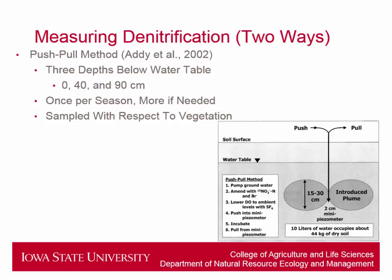The second method we're going to use to measure denitrification is the push-pull method developed by Addy et al. This method involves installing piezometers at three different depths — at zero, 40, and 90 centimeters below the water table. We push a plume of enriched N15-labeled nitrate as well as other tracers into the ground, let that incubate for a few hours, and then pump it out and analyze it for N15-labeled nitrate as well as nitrous oxide and regular nitrate and nitrous oxide. Over that time frame, we can determine the magnitude of the denitrification rate.